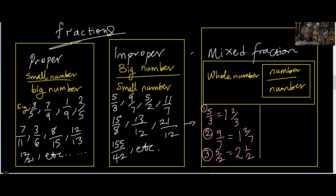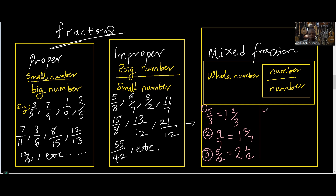When you have five — one, two, three, four, five — how many groups of two can we see? Two groups. Then you remain one. Now let me do one more: eleven over seven. How many times can seven go into eleven? Only one. When you count eleven and remove seven, only one group, then you have four left — so one and four over seven.